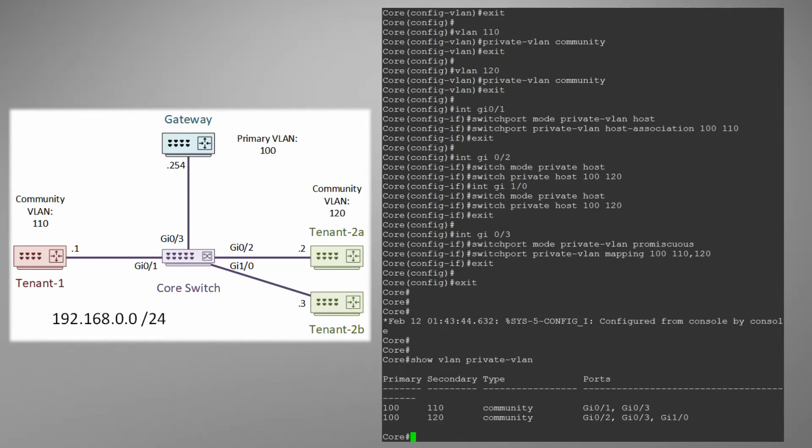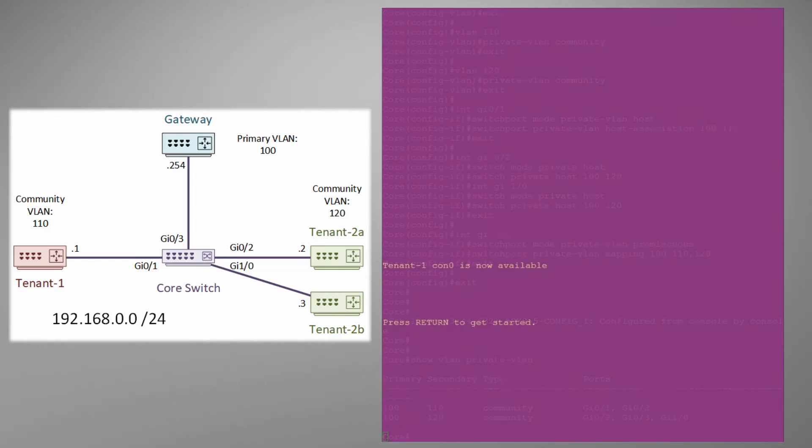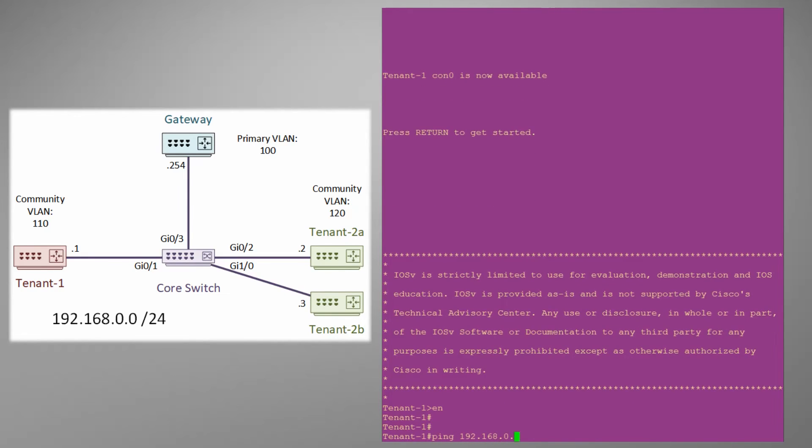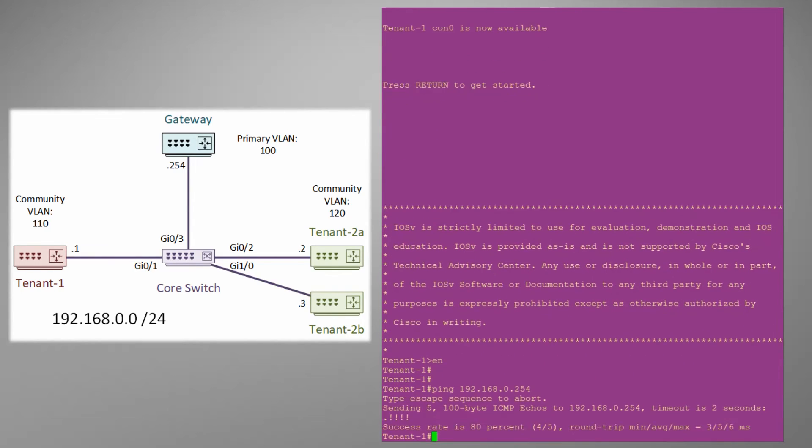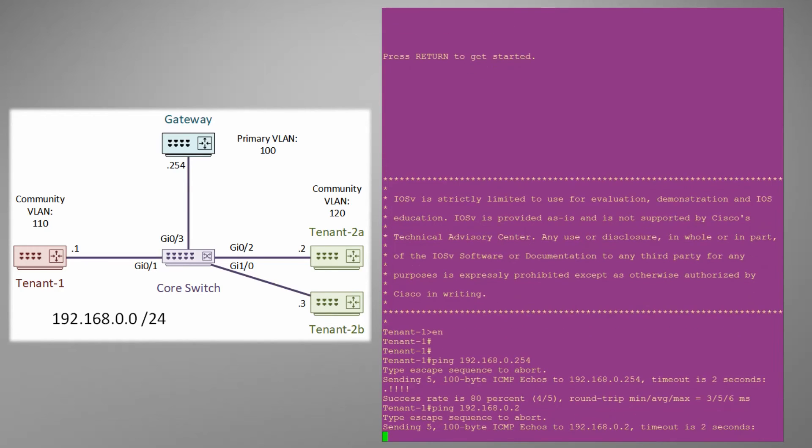And they look good. Now it's time for a real test. On tenant 1 we'll try to ping the gateway. And we can reach the gateway. If we try to ping tenant 2 it fails which is exactly what we want.